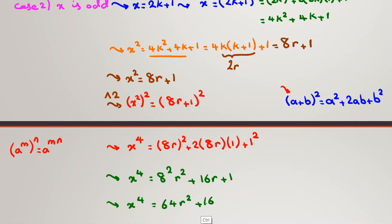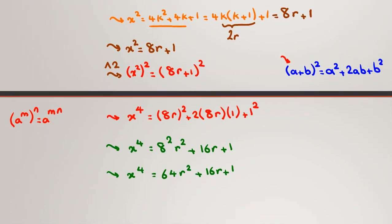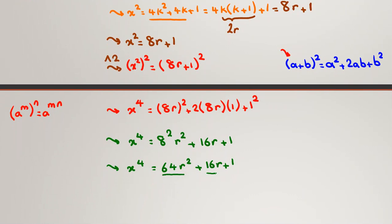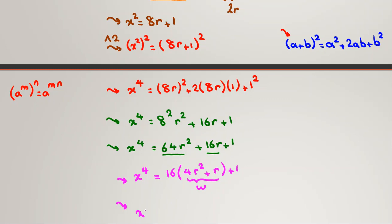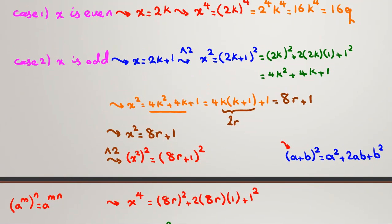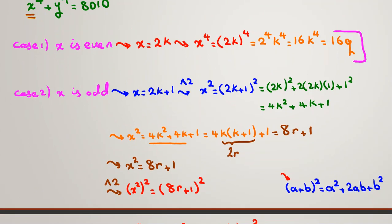We can factor 16 from the first two terms: x to the 4 equals 16(4r² + r) + 1. Calling (4r² + r) = w, we conclude: if x is odd, x to the 4 equals 16w + 1, meaning the remainder when divided by 16 is 1. If x is even, x to the 4 equals 16q, a multiple of 16, so the remainder is 0.